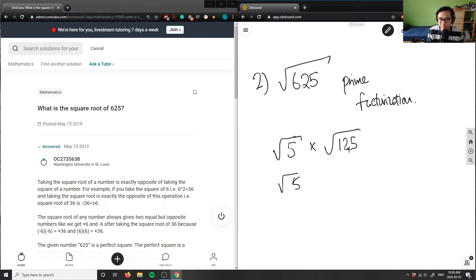And again, I'm going to take another root 5 out from 125 here. So 125 divided by 5 would be root 25 here. And finally, I know that root 25 here is simply just 5.